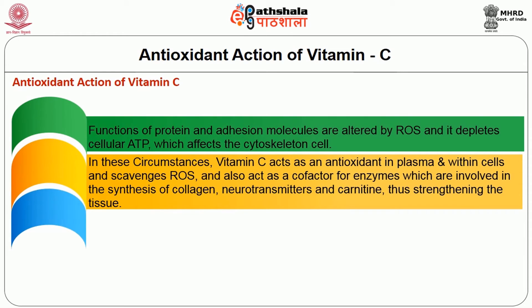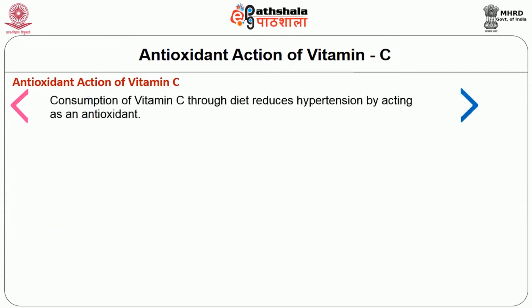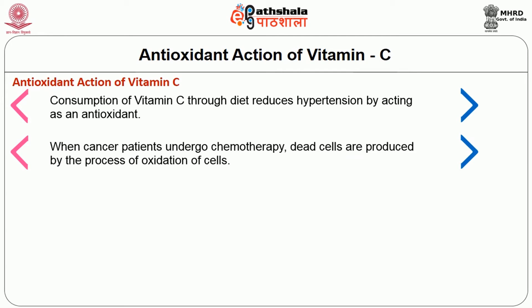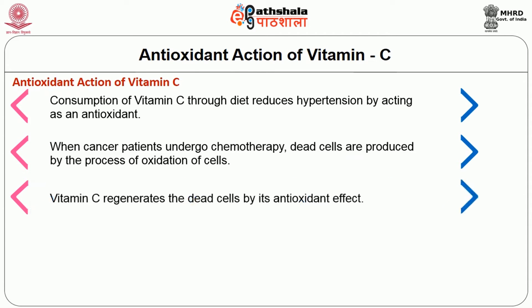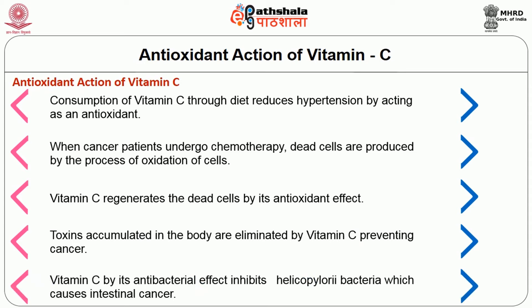Functions of protein and adhesion molecules are altered by ROS, and it depletes cellular ATP which affects the cytoskeleton. In these circumstances, vitamin C acts as an antioxidant in plasma and within cells, scavenging ROS and acting as a cofactor for enzymes involved in the synthesis of collagen, neurotransmitters and carnitine. Consumption of vitamin C through diet reduces hypertension by acting as an antioxidant. When cancer patients undergo chemotherapy, vitamin C regenerates cells damaged by oxidation through its antioxidant effect.